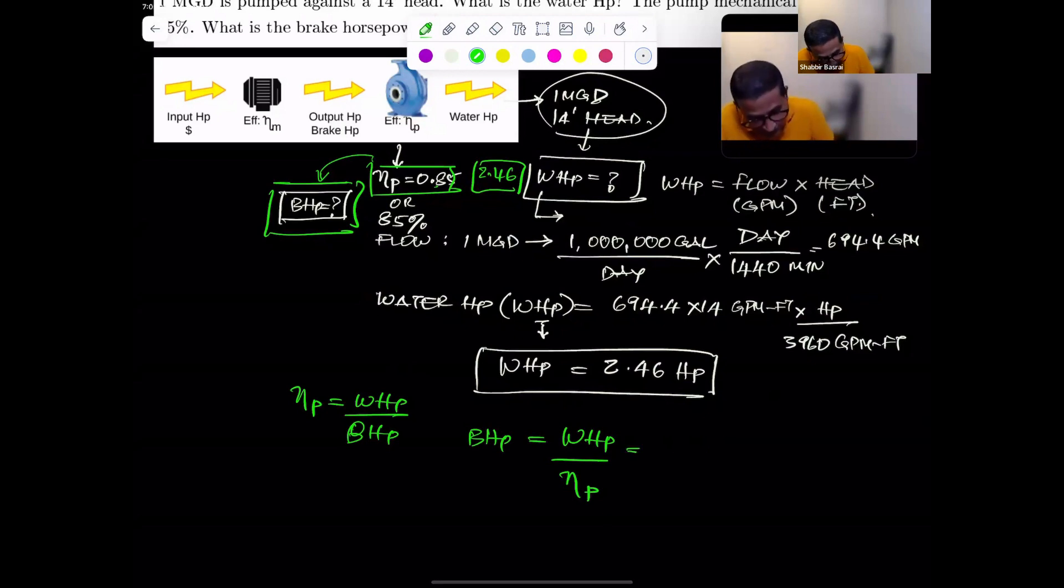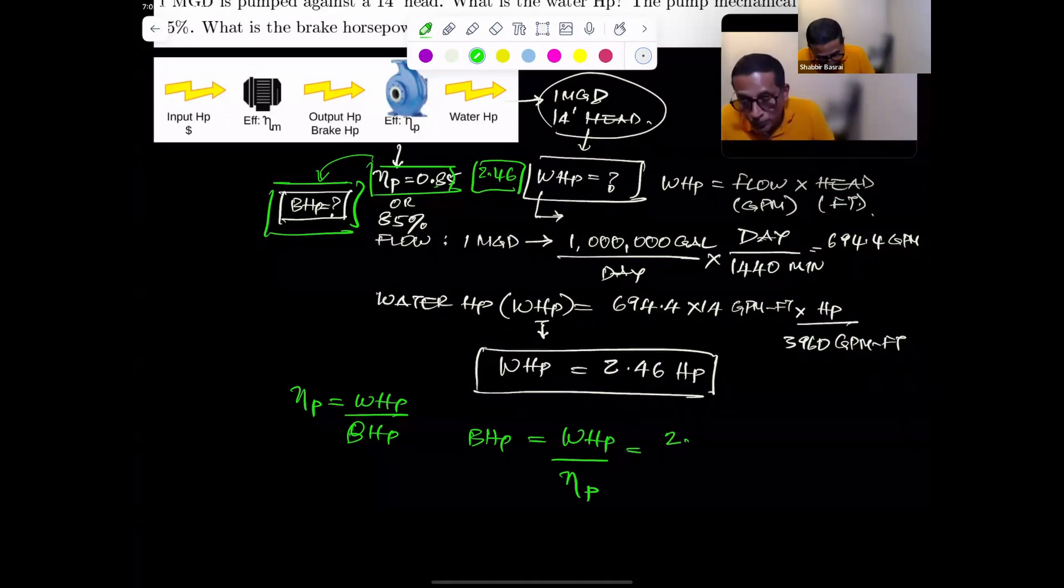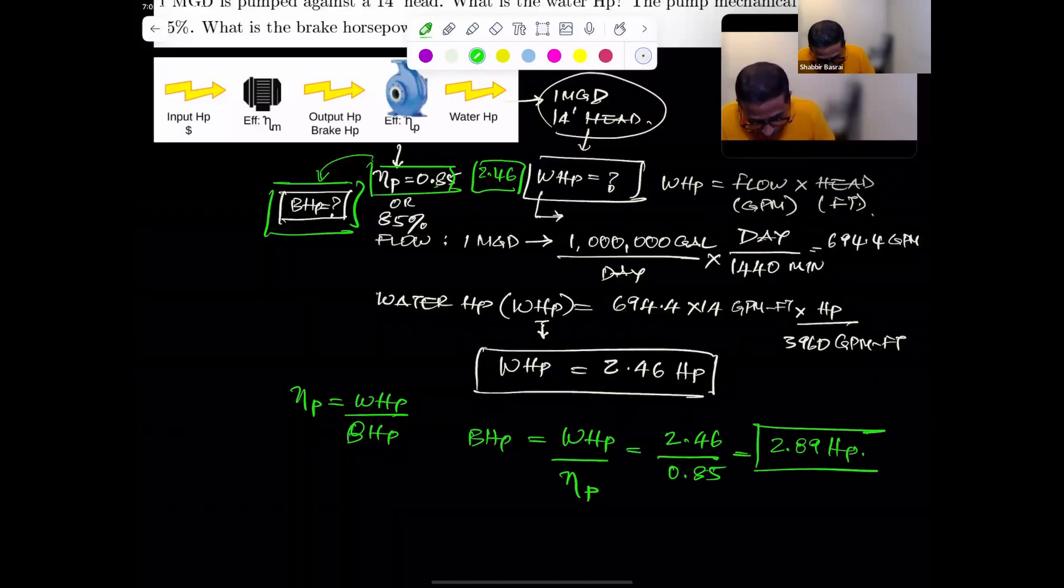This is equal to 2.46 divided by 0.85. This equals 2.89 horsepower. So your brake horsepower is 2.89.